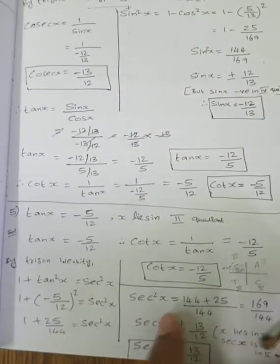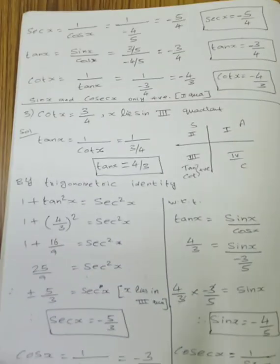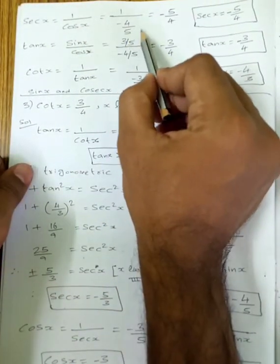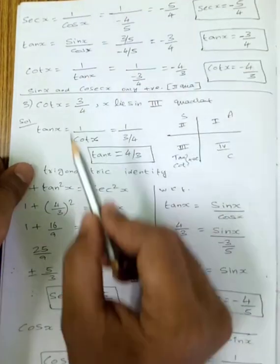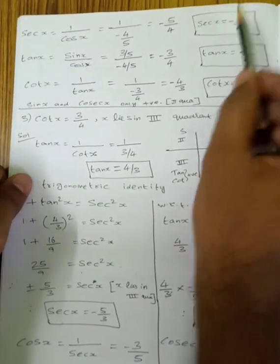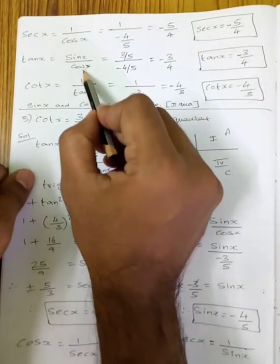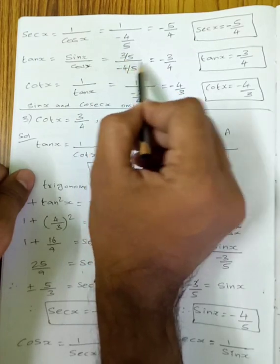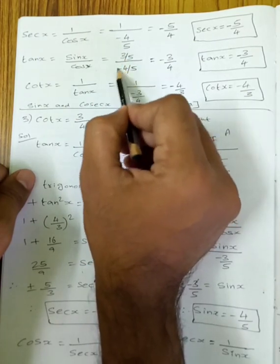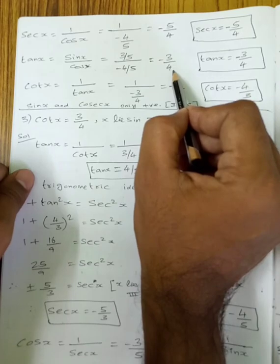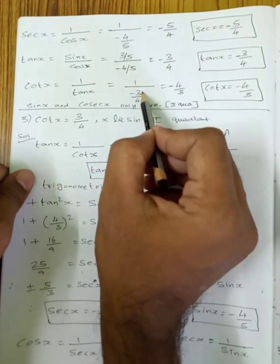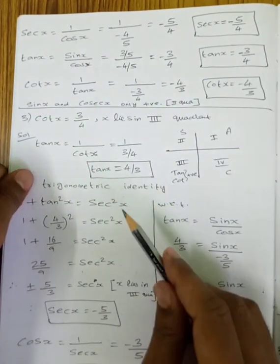So secant x equals 1 by cos x, which is 1 by (minus 4 by 5), so secant x equals minus 5 by 4. Tan x equals sin x by cos x: sin value 3 by 5, cos value minus 4 by 5. The 5's cancel, giving minus 3 by 4. Cot x equals 1 by tan x, so 1 by (minus 3 by 4) equals minus 4 by 3.